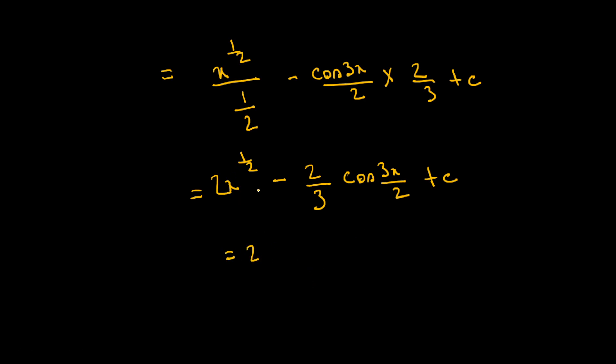2x to the power half, which is 2 root x, minus 2 by 3 cos 3x divided by 2 plus c.